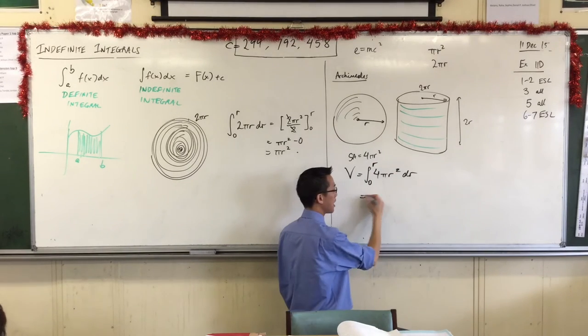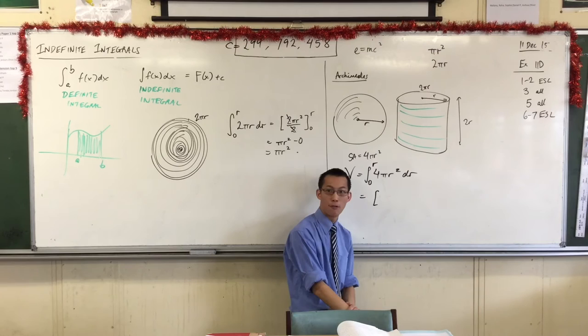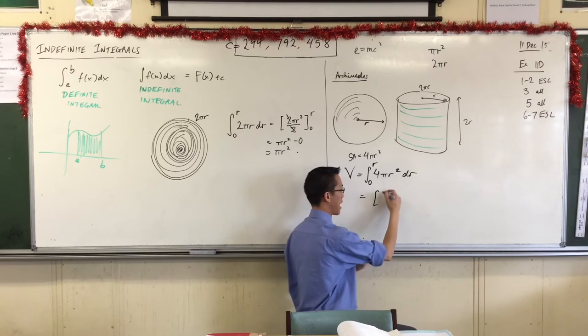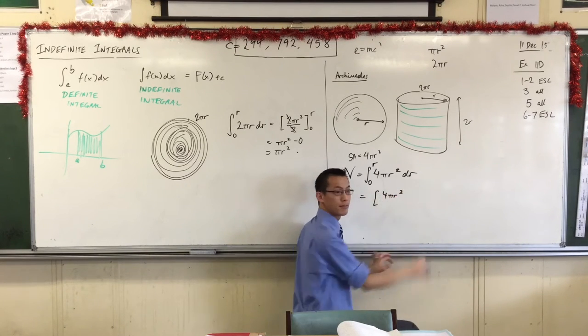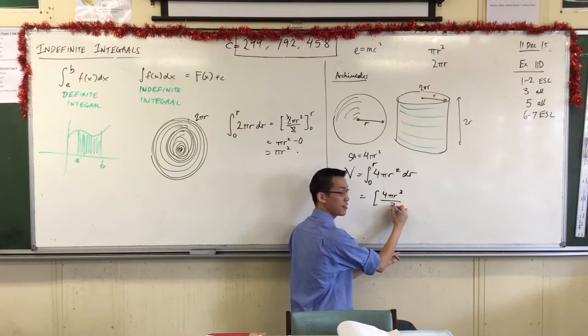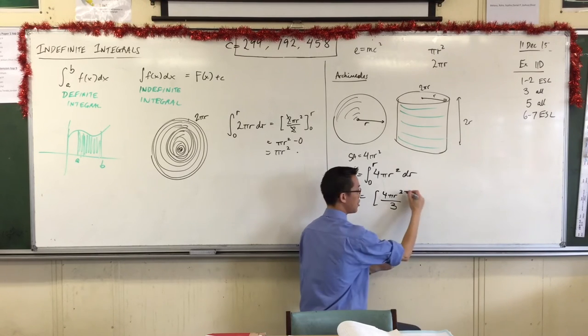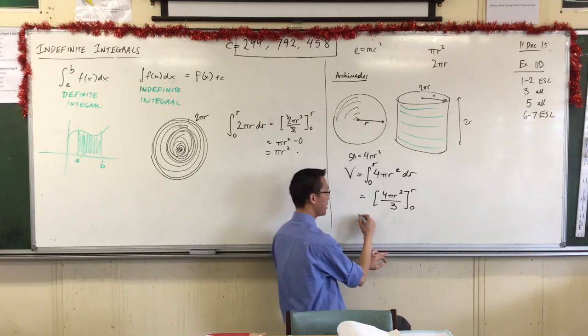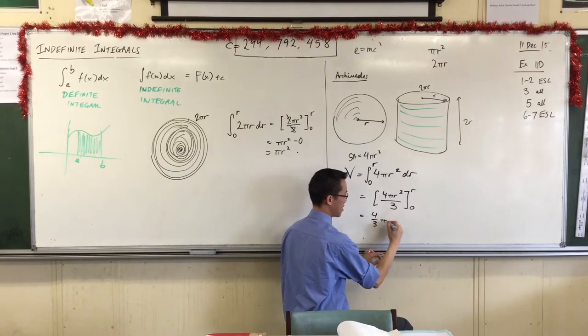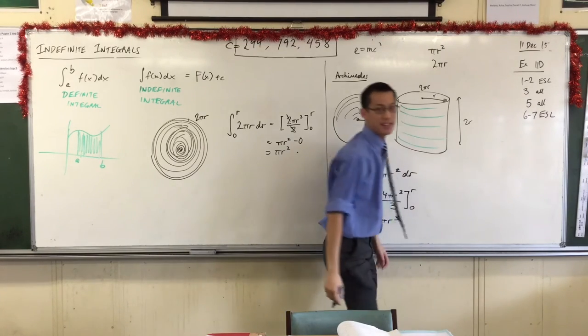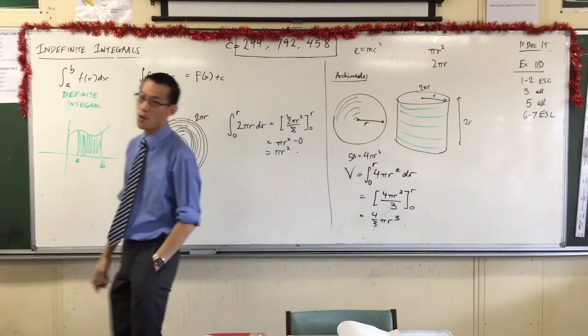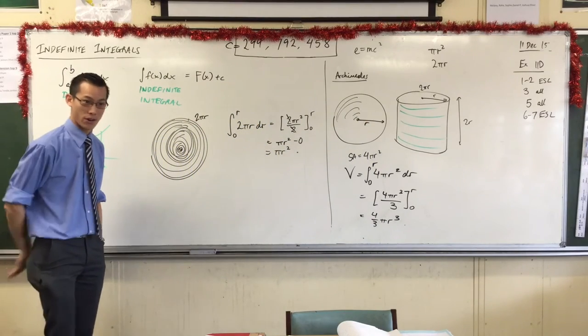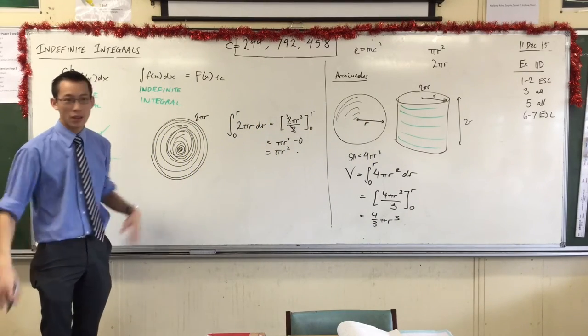So you just do your normal thing, and you say, well, what's the primitive function of 4πr²? And you take the power up to 3, then you divide by that power, and you evaluate it at the upper and lower bounds, which unsurprisingly is that sneaky little formula which you've learned for so many years and not known where it came from.